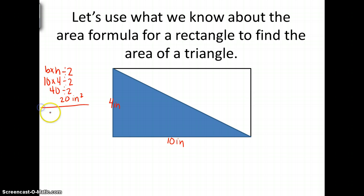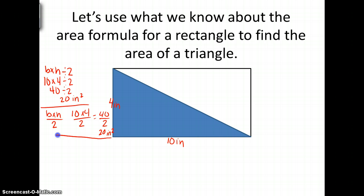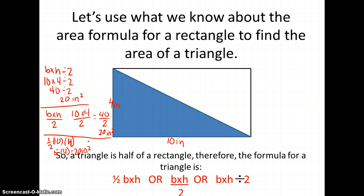I can write this formula in different ways. I could write base times height divided by 2 — substituting 10 times 4 divided by 2, using order of operations: 10 times 4 is 40, divided by 2 gives 20 inches squared. There is one more way: I can take half of the base times the height — half of 10 is 5, times 4 is 20 inches squared. It doesn't matter which formula you use, because all three give you the same area.